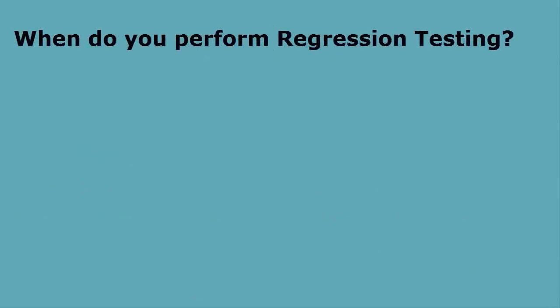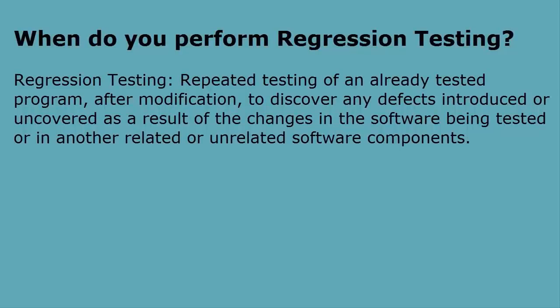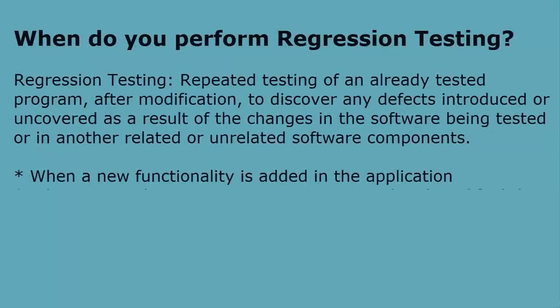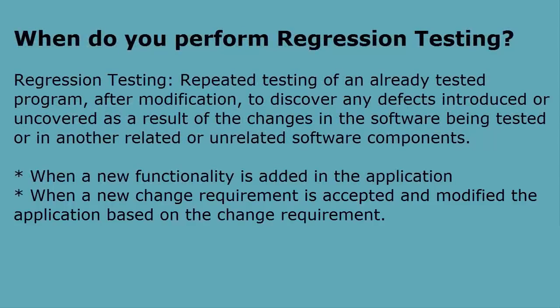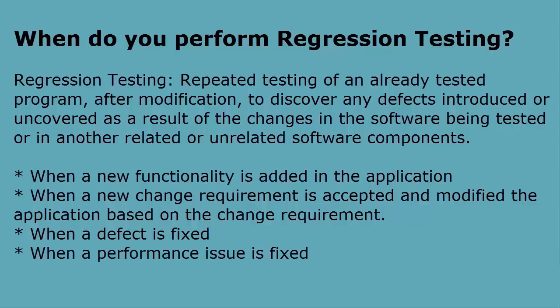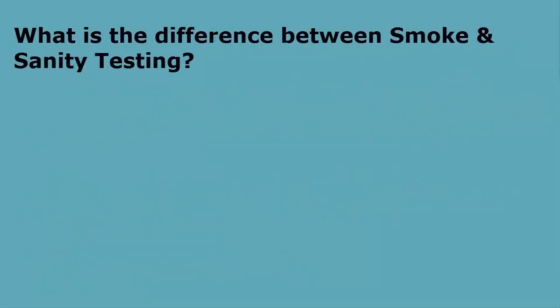When do you perform regression testing? Regression testing is defined as the repeated testing of an already tested program after modification, to discard any defects introduced or uncovered as a result of changes in the software being tested or in another related or unrelated software component. Usually we perform regression testing when a new functionality is added, when a change requirement is accepted and the application is modified, when a defect is fixed, when a performance issue is fixed, or when an environment is changed.